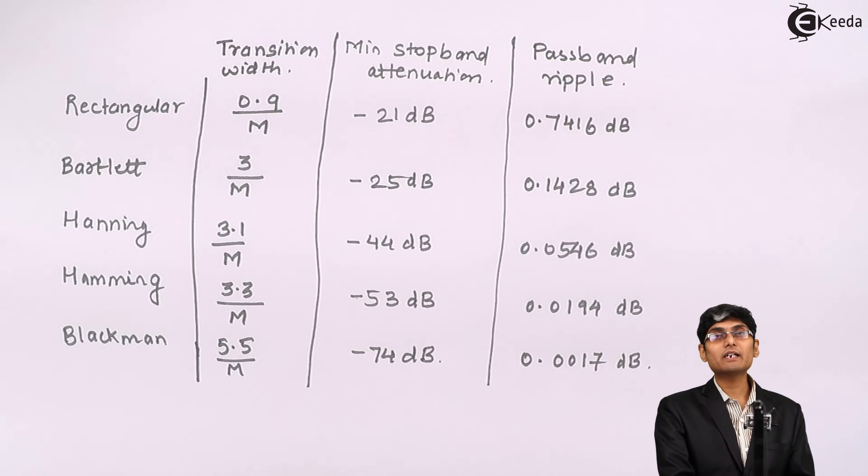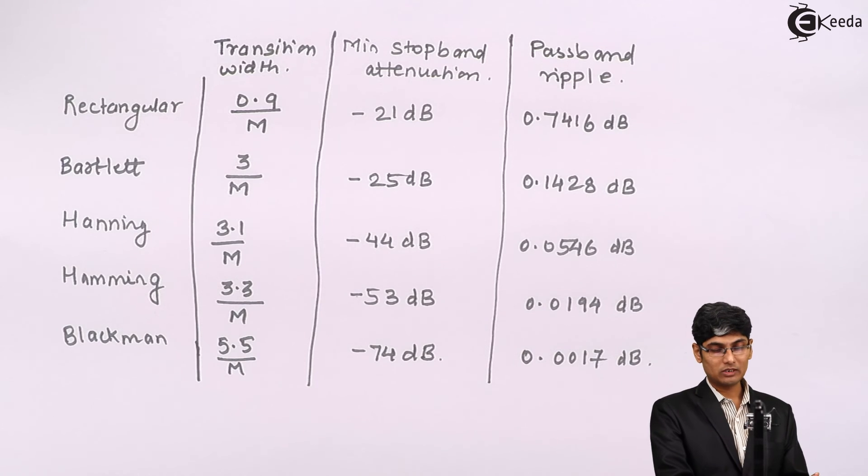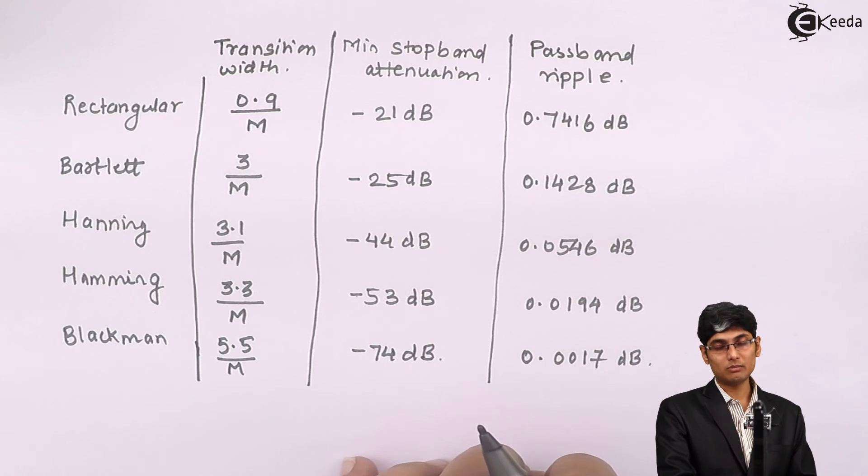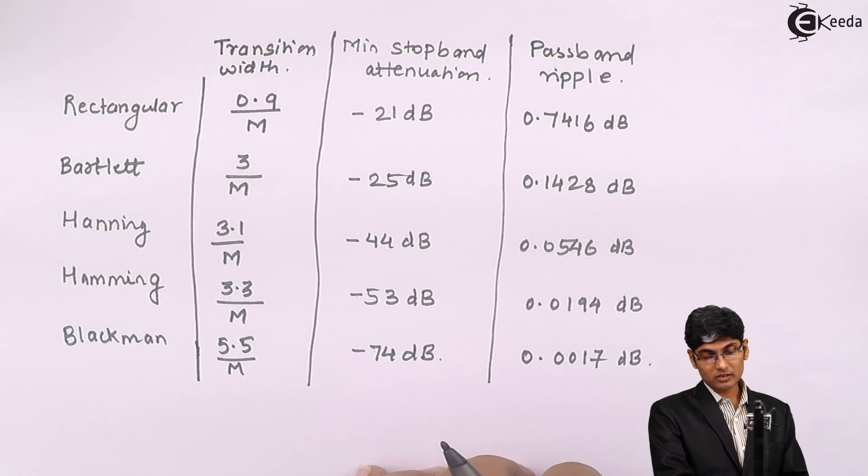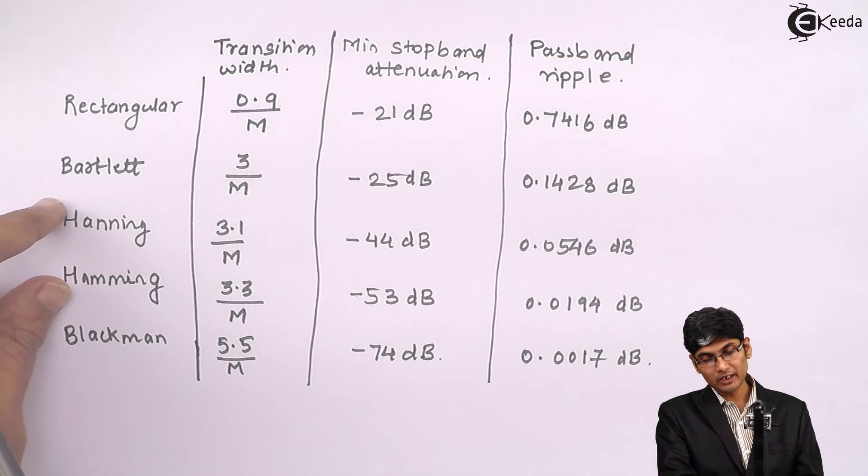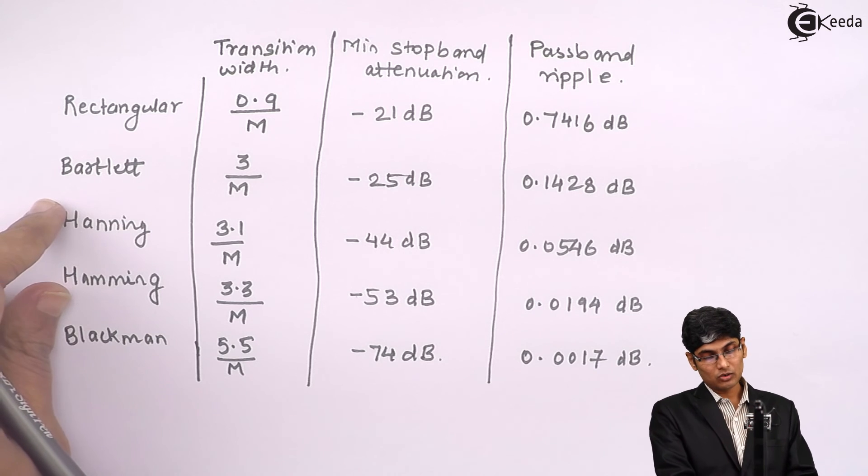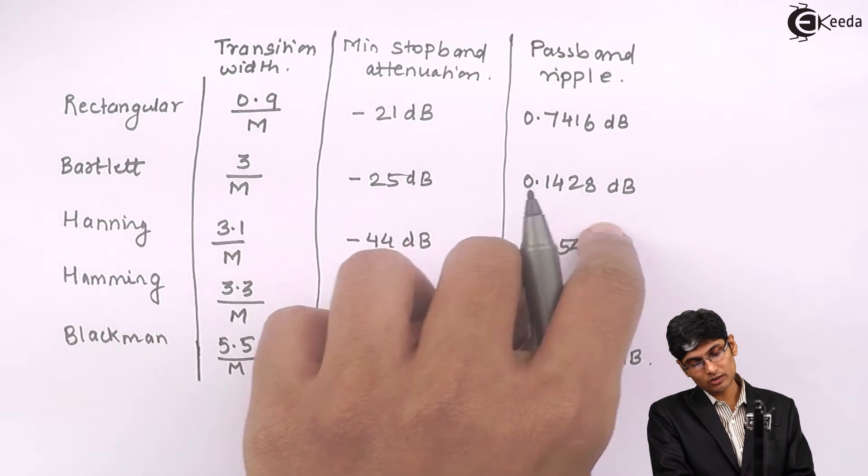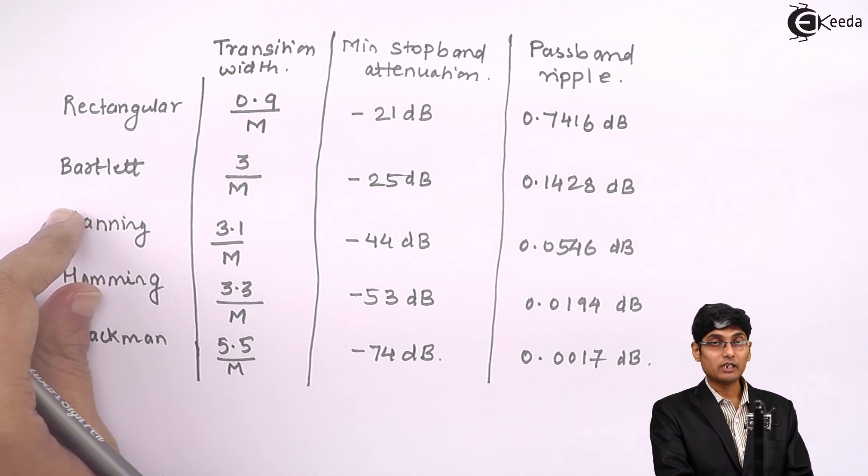So these characteristics are encouraged to the reader to be marked up for the exam, because during the exam nothing like a lookup table would be provided for this table. Now, the famous windows which are normally asked in papers are Hamming and Hanning, so we need to focus more on these two windows, but it might happen that any of the windows would be asked in the paper.